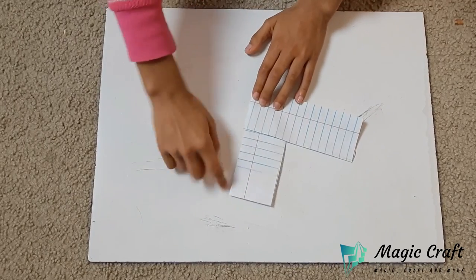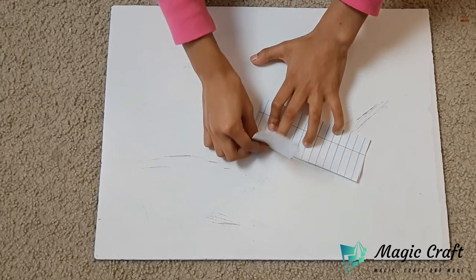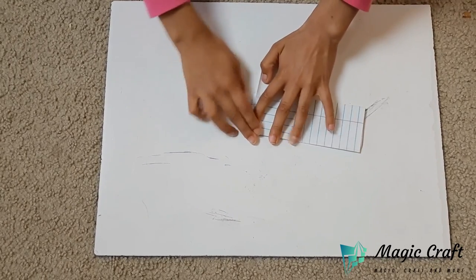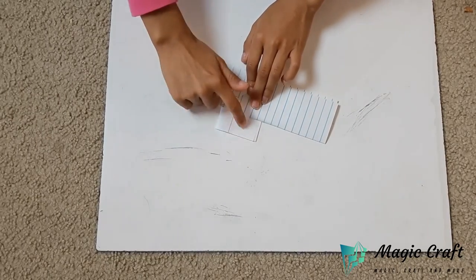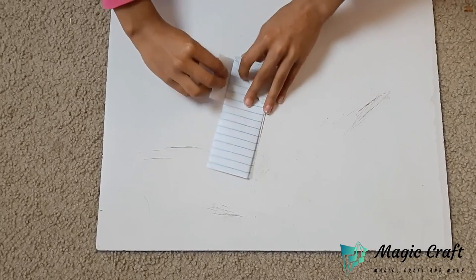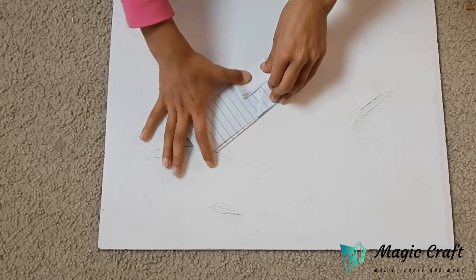Then flip it over and fold the excess paper until it comes the other way. Fold the excess paper into the triangle pocket.